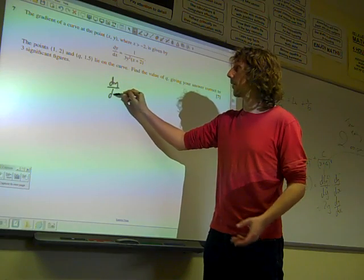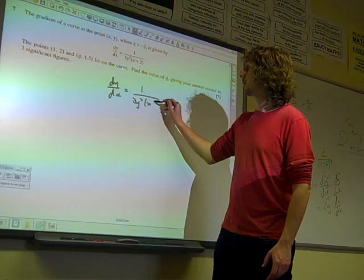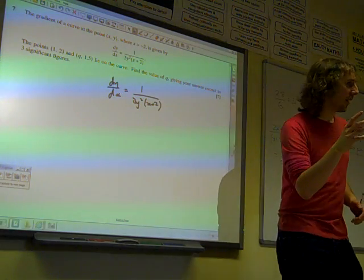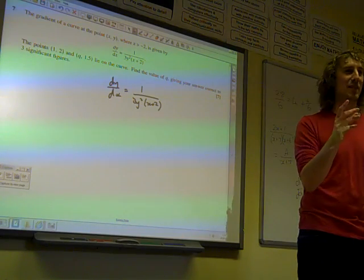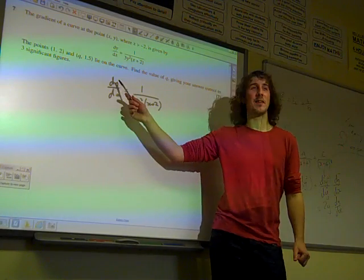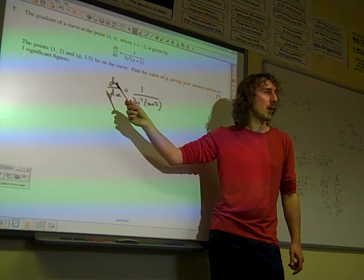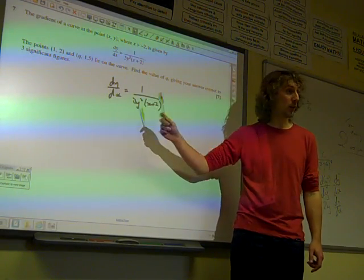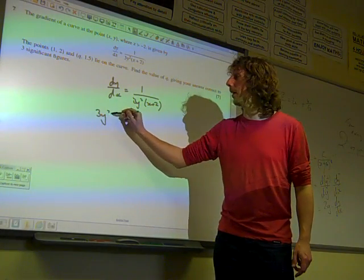In order to solve this, can you tell yourself what you have to do? You need to separate the variables and integrate them. Now we need to get everything involving y up there with dy. We need to leave everything involving x on the other side. So to start with, let's multiply through by 3y². We need that up here.